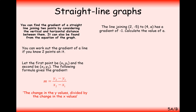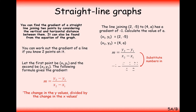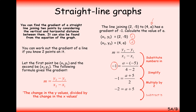In a similar question, we join coordinates 2, minus 5 to 4, a, and we know the gradient is minus 1. Setting m equal to minus 1 in our formula, attaching coordinate 1 and 2 labels, and substituting the values into the correct positions, we can simplify and rearrange to find that a equals minus 7.